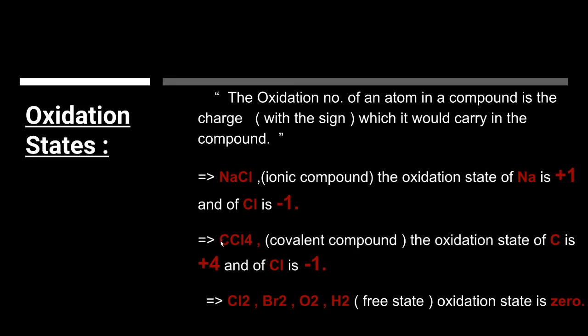On the other hand, this is carbon tetrachloride, CCl4, and it is a covalent compound formed by the sharing of electrons. In this case, the oxidation states are defined on the basis of the difference in the relative electronegativities. Electronegativity is the chemical property that describes the tendency of an atom to attract a shared pair of electrons towards itself. The oxidation state of carbon is positive 4 and of chlorine is negative 1.